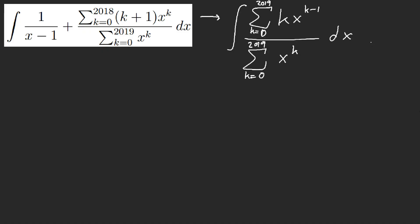So now you realize, oh, it's just a u substitution. Let this equal u. So now you have ln of x minus one plus and then ln of u.